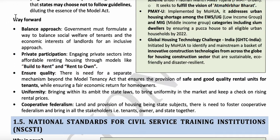For the way forward, the government should meet the needs of tenants and also the economic interests of landlords, so there should be a balanced approach. They should support private participation for housing and affordable renting, and bring down the vacancy of renting houses. They should keep a check on rising rental prices frequently. There should be cooperative federalism where the needs of tenants, owners, and the state are addressed to ensure overall development.